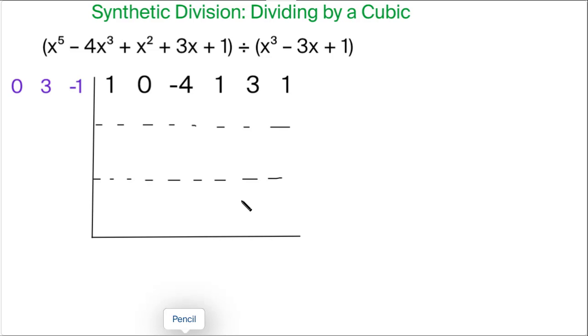Similar to more basic synthetic divisions, this leading 1 comes right down to the bottom so we put a 1 there. The zero actually comes down two levels, so we put a zero there. And the next term comes down one level, so we put a negative 4 there.